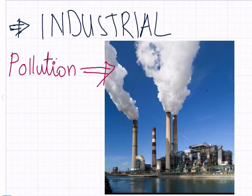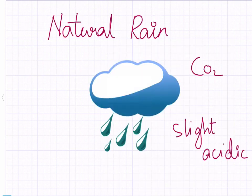What is acid rain? It is a phenomenon caused by industrial pollution. Natural rain always contains a small amount of dissolved carbon dioxide which makes it slightly acidic.